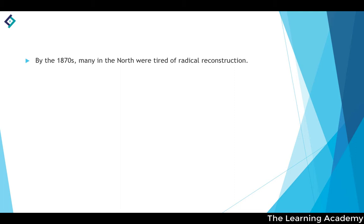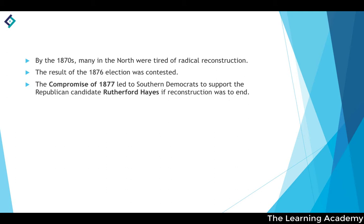By the 1870s, many in the North were also tired of Radical Reconstruction. The 1876 election was contested, and the Compromise of 1877 led Democrats to support Republican candidate Rutherford Hayes if Reconstruction was to end — a compromise where supporting a candidate of a different party was exchanged for ending Reconstruction.